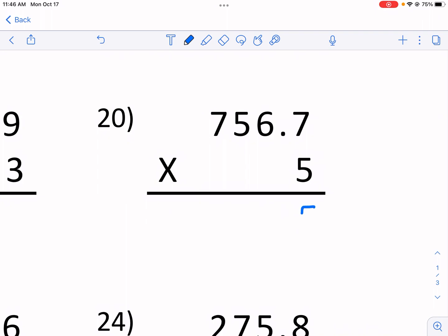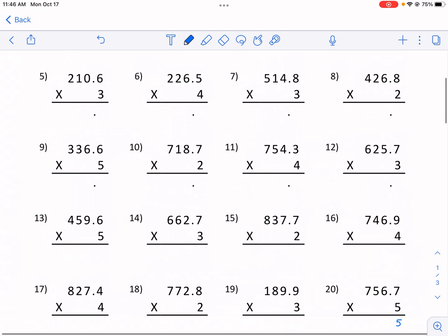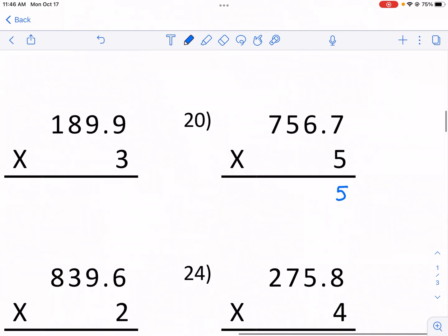So we have 7 times 5, that is 35. Now look, the training wheels are off. Notice how in the first two rows we have the decimal. Now the decimal is not there. Okay, I'm gonna show you what I like to do. I like to ignore it for now. Just ignore that decimal and we're gonna get to it at the end.